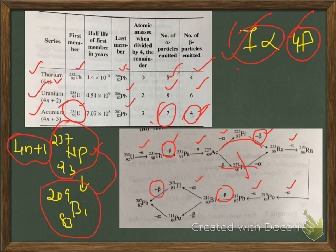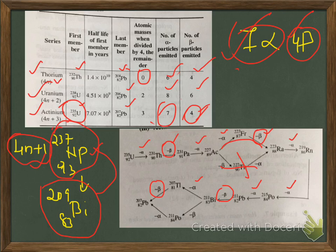This kind of arrangement of elements is called radioactive disintegration series. Now you have to see the significance of 4n, 4n+1, 4n+2, etc. When the mass number of any element in that series is divided by 4, if there is no remainder, it belongs to the 4n series. If the remainder is 1, it belongs to 4n+1 series; remainder 2 means 4n+2 series; remainder 3 means 4n+3 series.